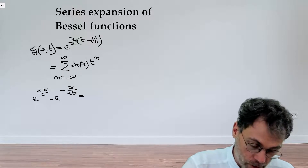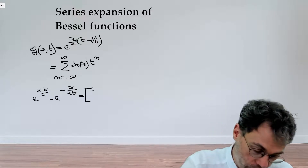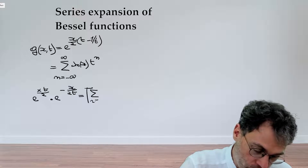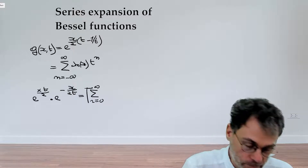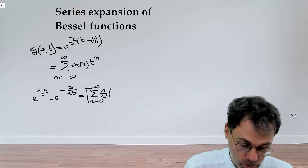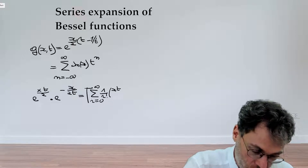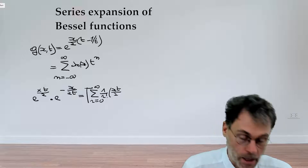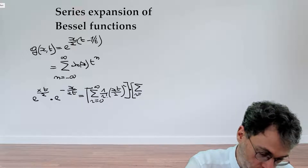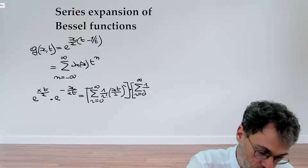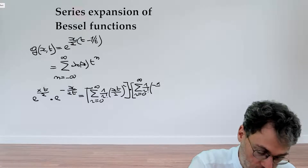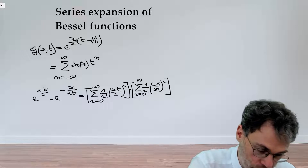For the first factor, using summation index r, we have the sum over r from 0 to infinity of (1 over r factorial) times (x t over 2) to the power of r. For the second factor, similarly we have (1 over r factorial) times (minus x divided by 2t) to the power of r.